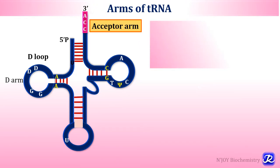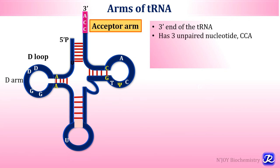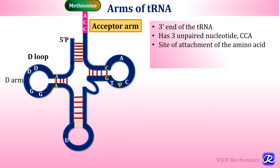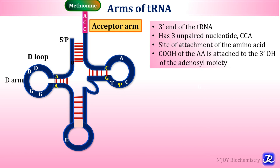The acceptor arm is present at the 3' end of tRNA, which is the amino acid attachment site. It has seven base pairs and terminates with the triplet CCA sequence — cytosine, cytosine and adenine — to which the activated amino acid attaches. Each tRNA carries only one amino acid, and the carboxyl group of the amino acid is attached to the 3' hydroxyl group of the adenosyl moiety, allowing the tRNA to transport the activated amino acid to the ribosome for protein synthesis.